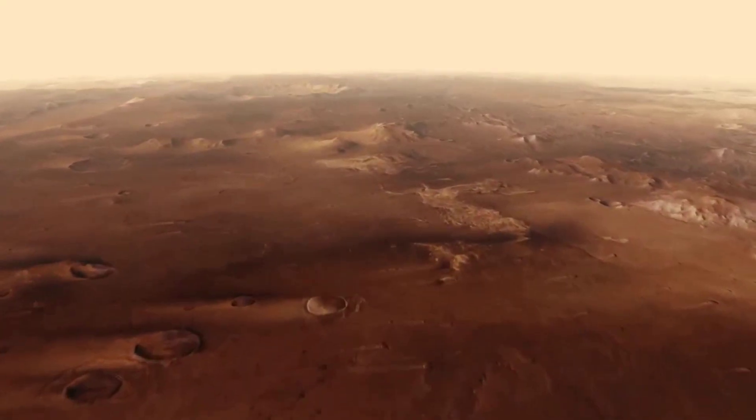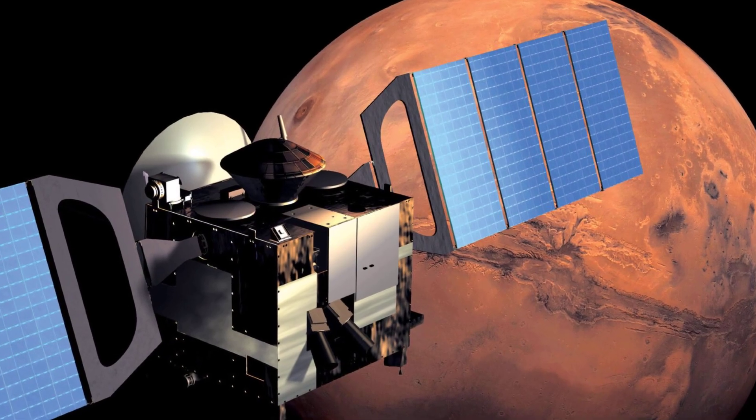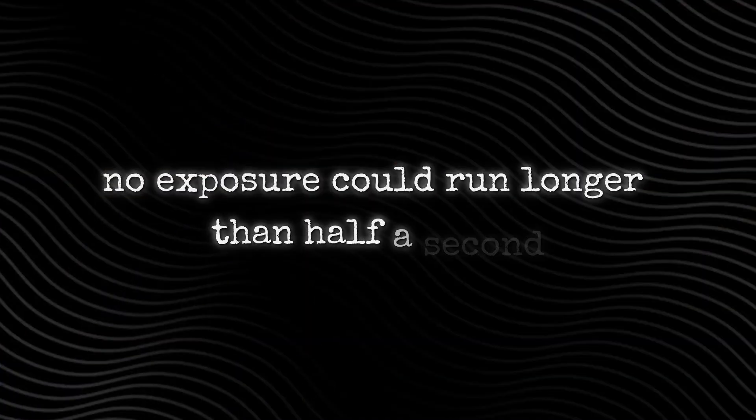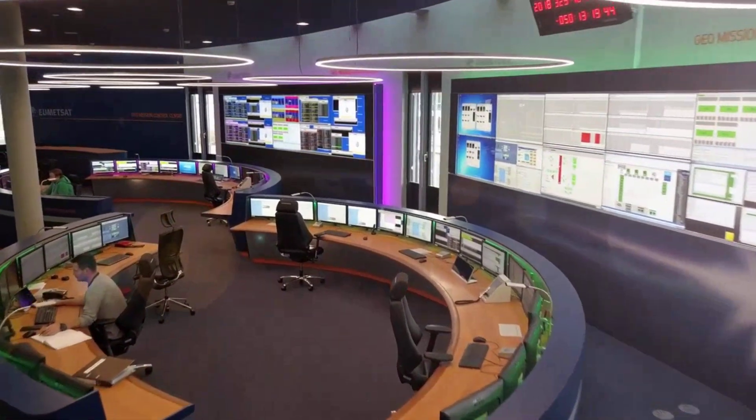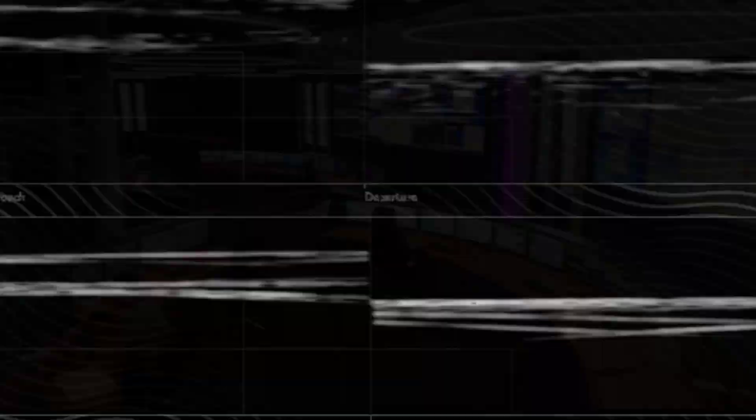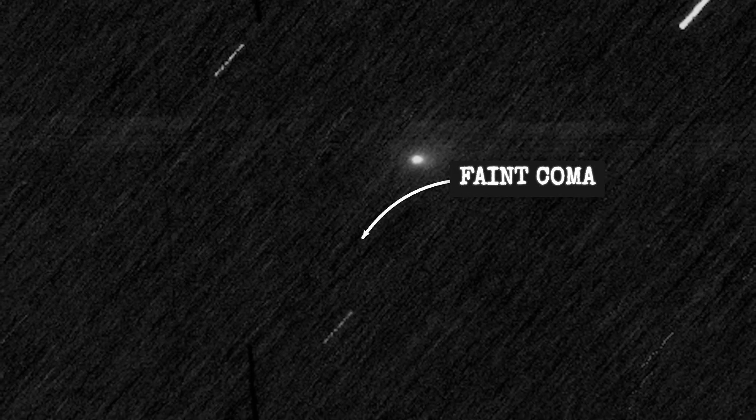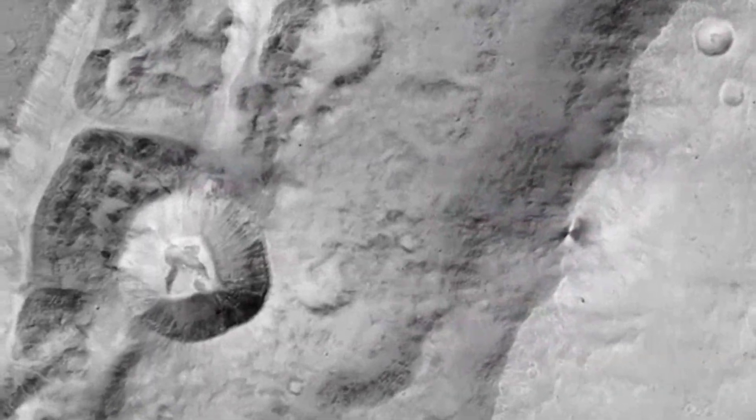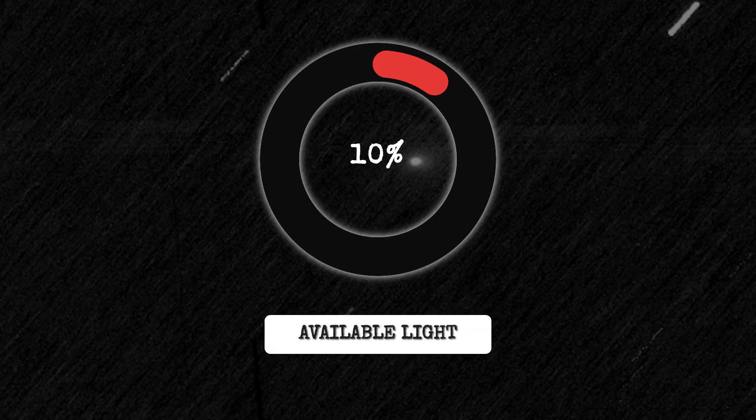Mars Express entered the campaign with a very different set of tools and constraints. Its visual monitoring camera, originally designed for engineering snapshots, faced a hard ceiling: no exposure could run longer than half a second. For astronomers chasing a comet 30 million kilometers away, this was a severe handicap. Every frame captured was dominated by noise, the faint signal from 3I-Atlas nearly drowned out by the background. Unlike the CAS-IS camera on ExoMars TGO, which could stretch to five-second integrations, Mars Express had to make do with a tenth of the light per image.